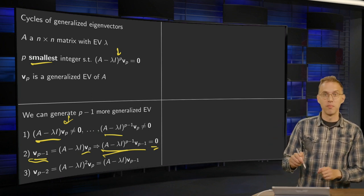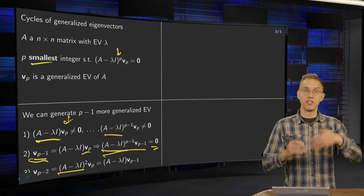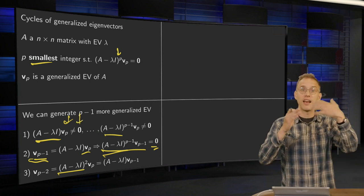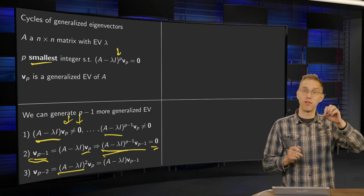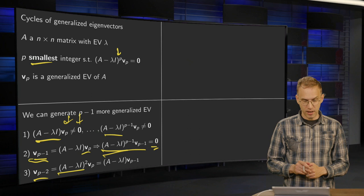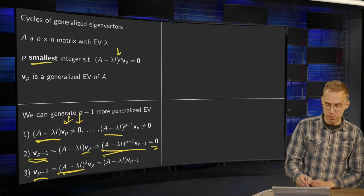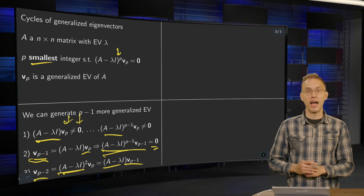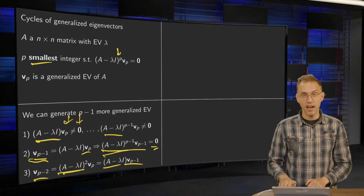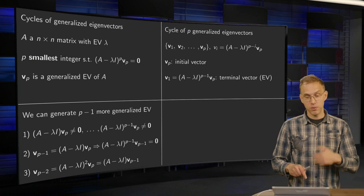You can continue this trick by multiplying vp with (A − λI)^2, which gives you vp−2. For the same reason it is a non-zero vector, and multiplying by (A − λI)^(p−2) gives the zero vector, so vp−2 is also a generalized eigenvector. It is usually easier to use vp−1 and compute (A − λI) times vp−1 to get vp−2. So you start with vp, multiply by (A − λI) to get vp−1, and continue this process.